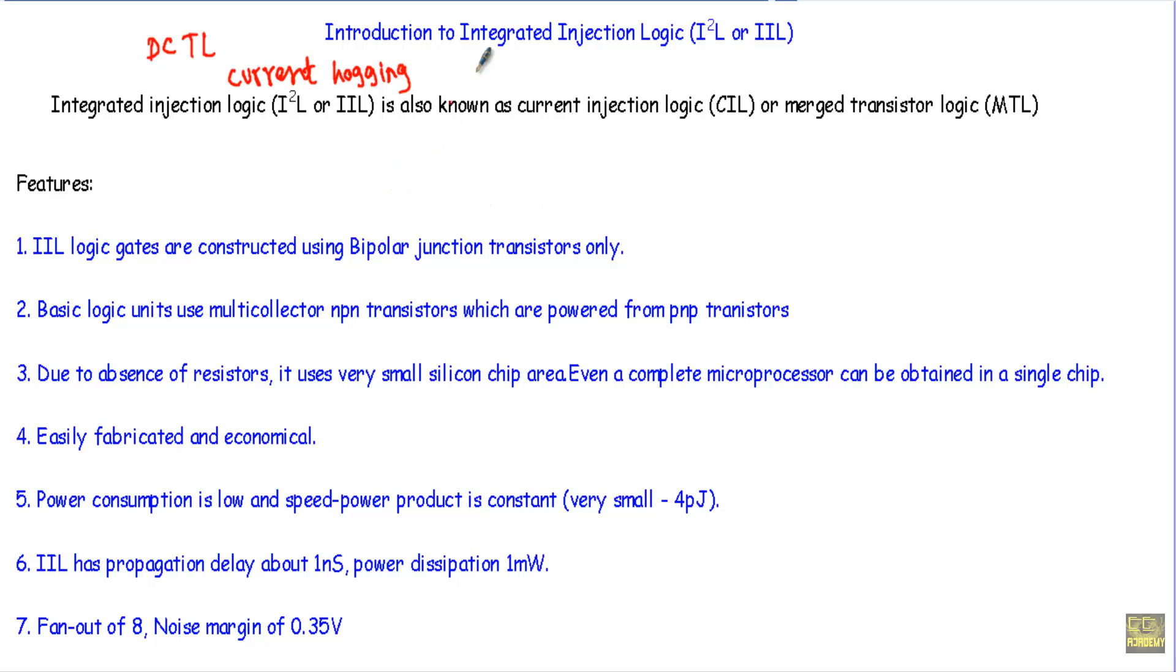There are some features of this Integrated Injection Logic. First, the IIL logic circuits will use only Bipolar Junction Transistors. The circuit will use only Bipolar Junction Transistors. There will be no circuit element other than the BJT.